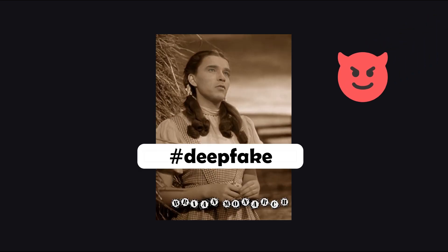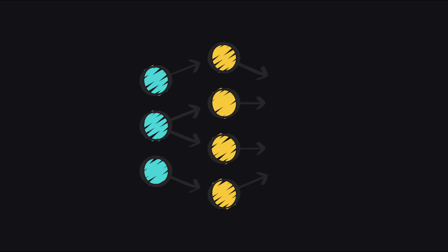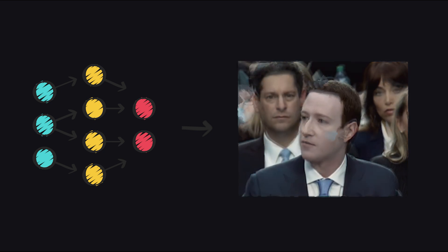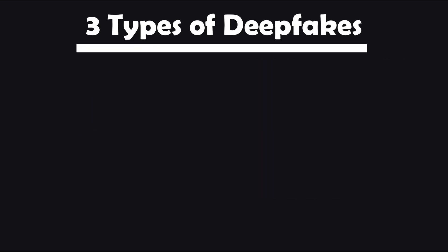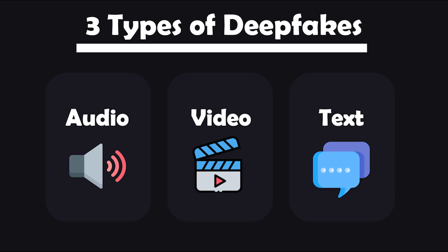But deepfakes can also be used for much more malicious purposes. But wait, what is a deepfake? At its core, a deepfake is a piece of synthetic media that appears authentic, but has been made or manipulated with generative AI models. There are three main types of deepfakes: audio, video, and text.